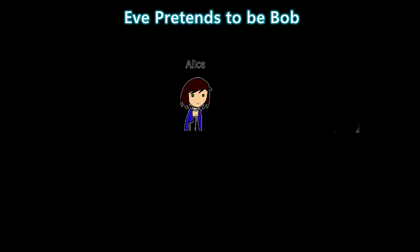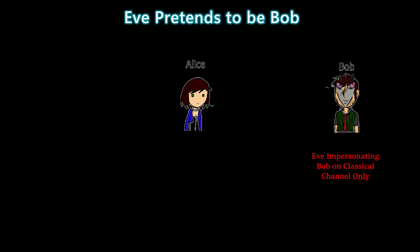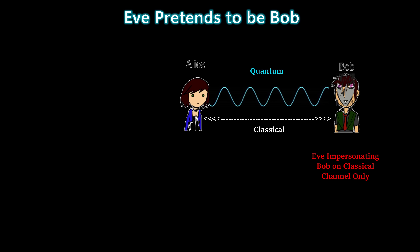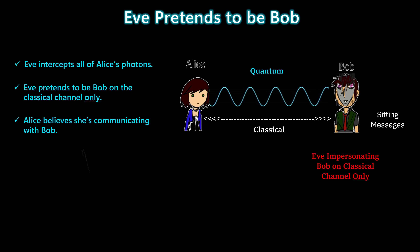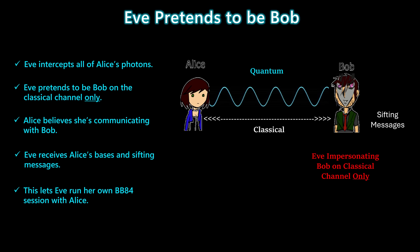Here's the first step of the man-in-the-middle attack. Eve intercepts all of Alice's photons, and then she pretends to be Bob on the classical channel. Alice believes she's communicating with the real Bob, so she openly sends her bases and sifting messages straight to Eve. This gives Eve everything she needs to run her own BB84 session with Alice, while Alice has no idea she's talking to an imposter.